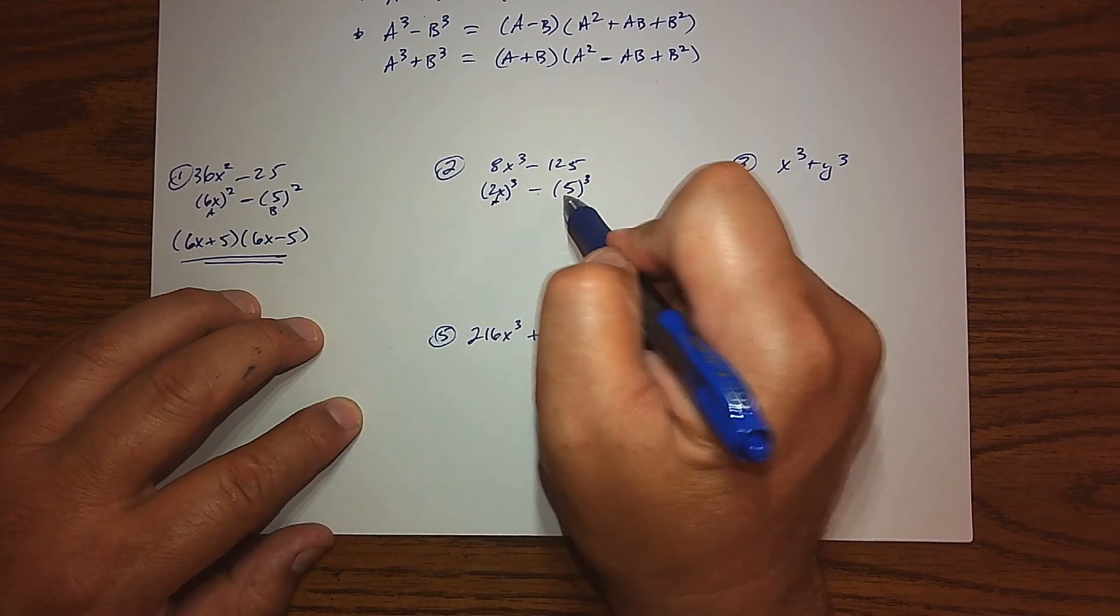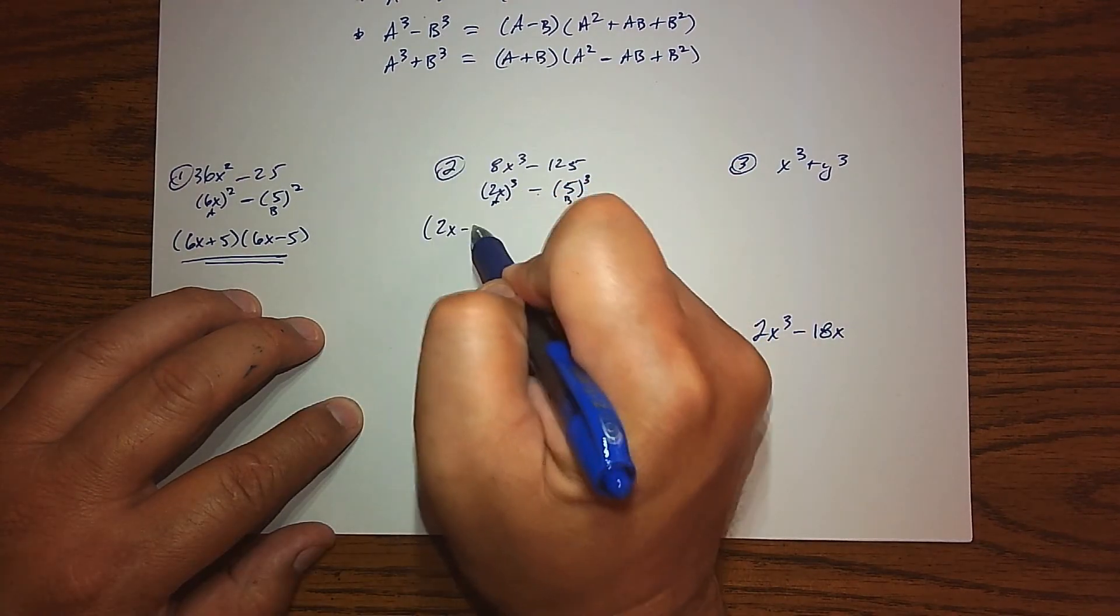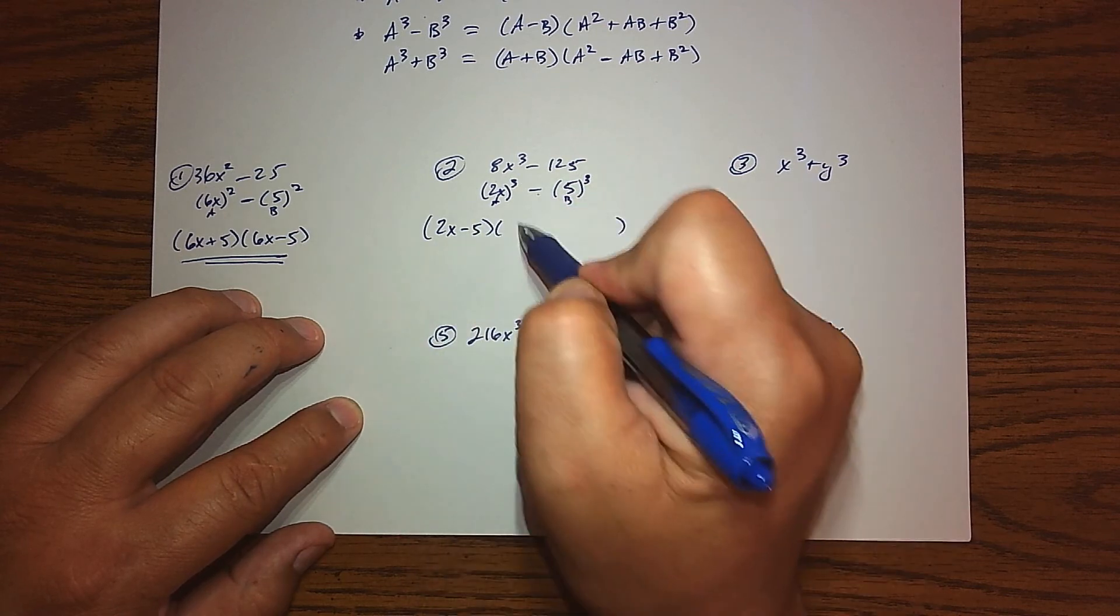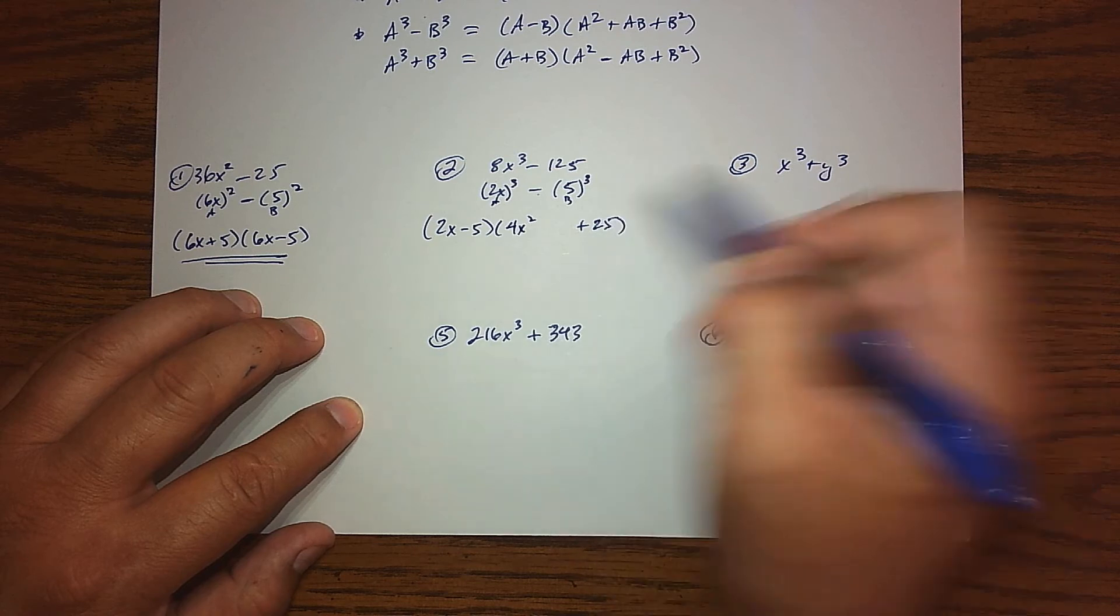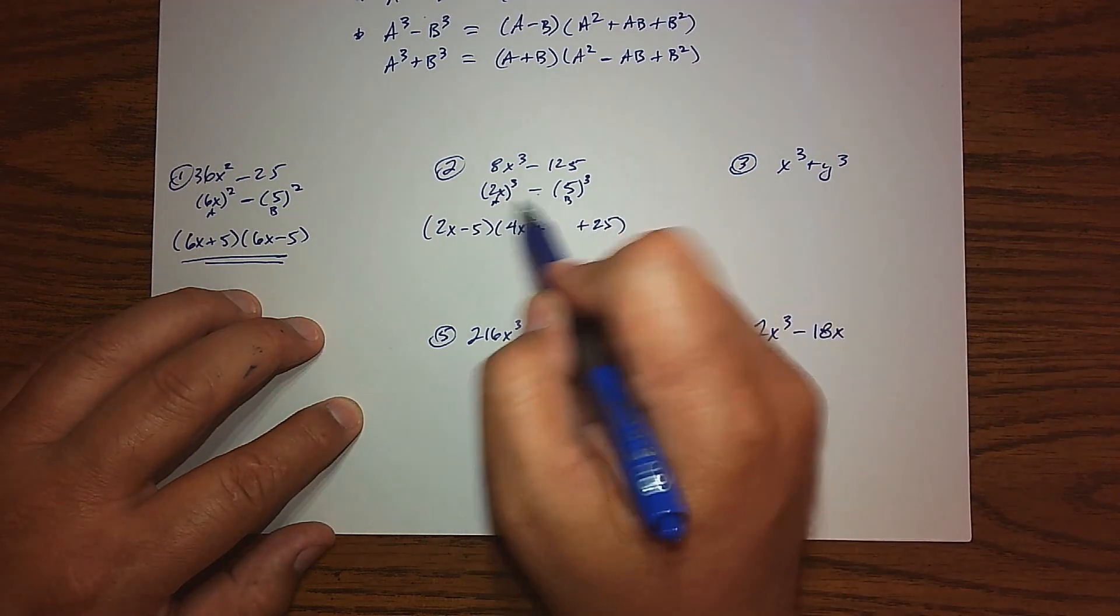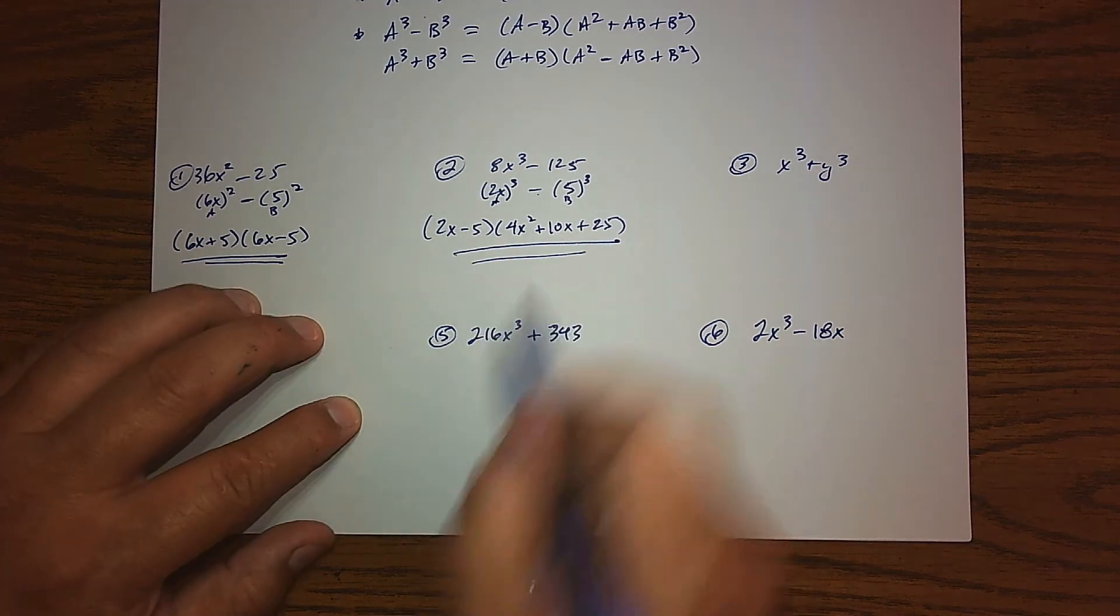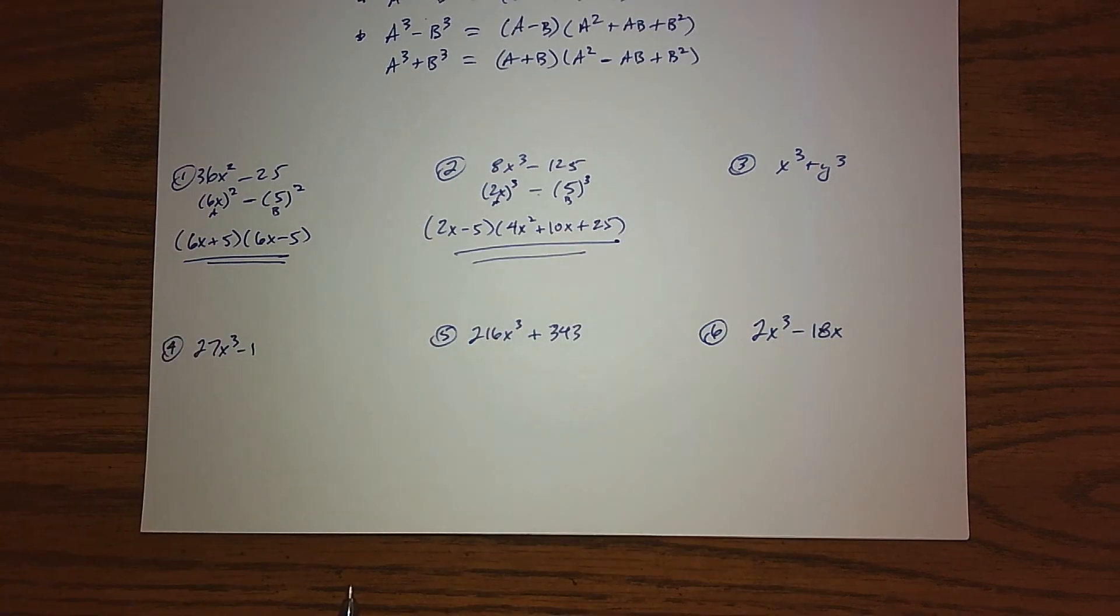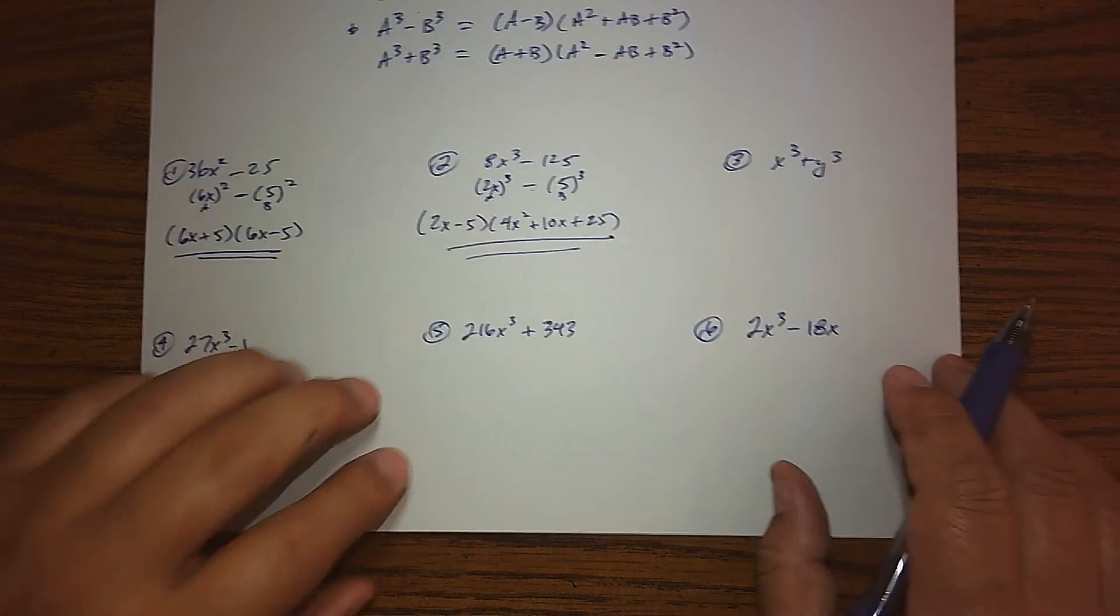Here's your a and there's your b. So the pattern says, well, let's subtract them, and then it's the first term squared, the last term squared, and then we're going to add their product. So 2x times 5 is 10x, and there's your factorization of that binomial using the difference of cubes.